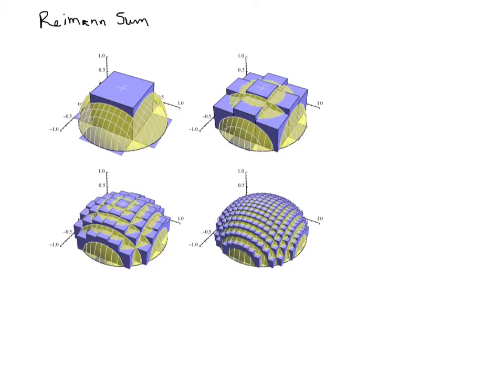And there are four different pictures here, each one depicting a different estimation to the volume under that sphere. And so just notice that this first one just has one rectangle.